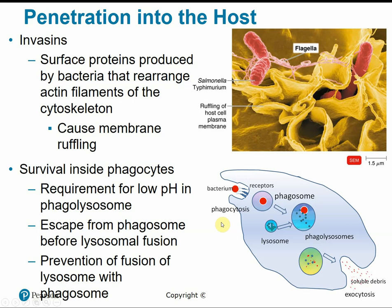Some pathogens are able to survive inside our phagocytes. Normally, captured pathogens are fused with a lysosome containing digestive enzymes, broken down, and the waste products exocytosed. But some pathogens can alter the pH inside the phagocyte, rendering those enzymes ineffective. Some escape from the phagosome before it fuses with the lysosome, so they're never exposed to those digestive enzymes. Some pathogens can even prevent fusion of the lysosome entirely — so just because a pathogen has been captured doesn't necessarily mean that's the end of it.